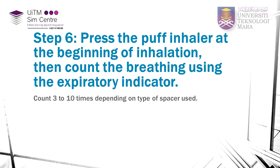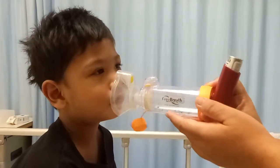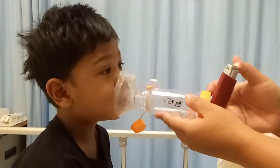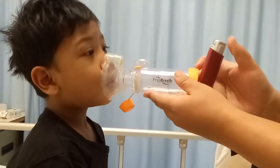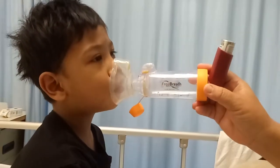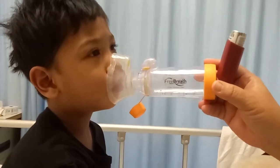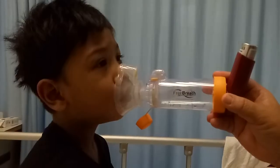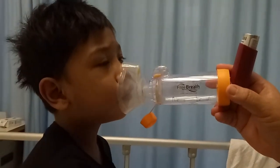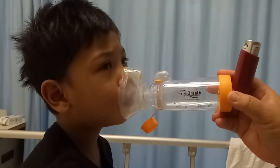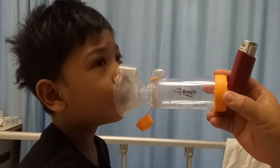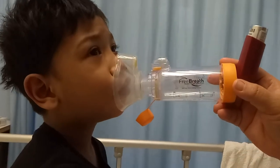Step 6: Press the puff inhaler at the beginning of inhalation and breathe through the mouth. Then count the breathing using the inspiratory or expiratory indicator. Count to 10 depending on the spacer you use.